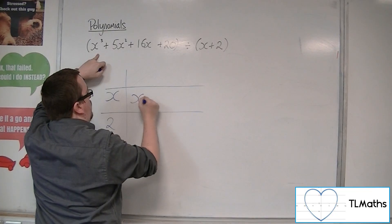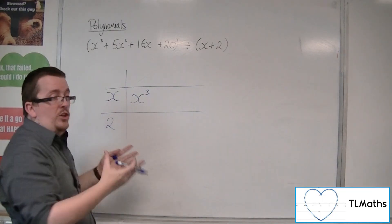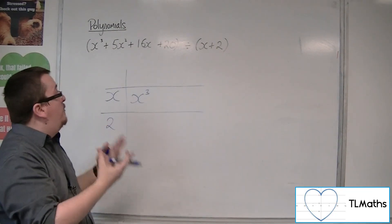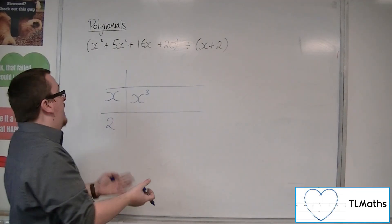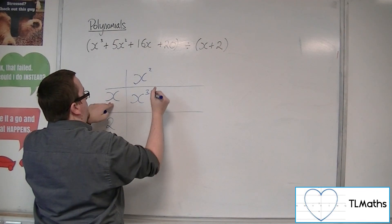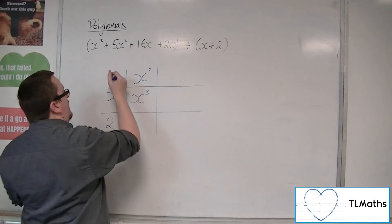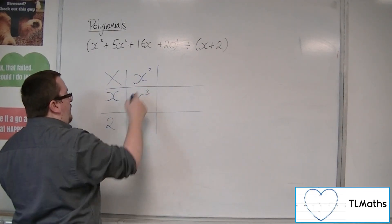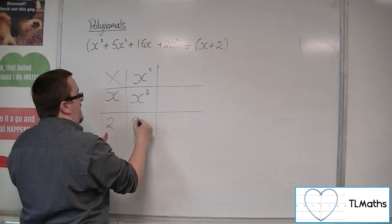So, we want to get an x cubed. Now, the only way that we can get an x cubed is if we'd had x times x squared. So, if that was the case, then the x squared would have had to have multiplied with the 2 to make 2x squared.